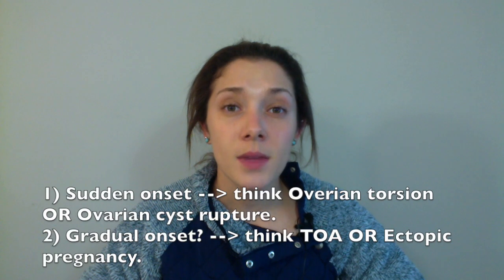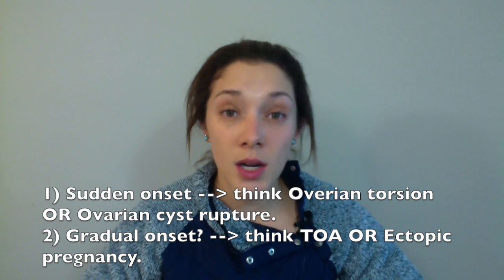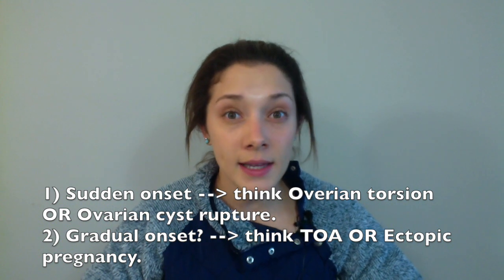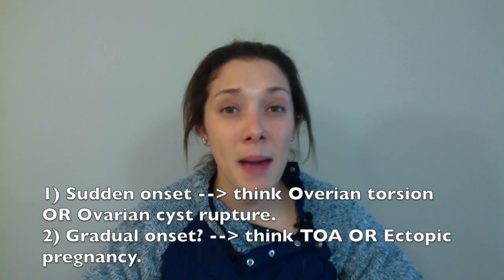There are a couple of differentials to consider for right lower quadrant pain, and it changes depending on whether your patient is female or male. If female, you need to think about ovarian pathologies. For sudden onset of pain, I consider ovarian torsion and ruptured ovarian cyst. Ovarian torsion is more of a medical emergency — think about it when there's sudden onset followed by colicky pain, nausea and vomiting, and there may be an adnexal mass on exam.